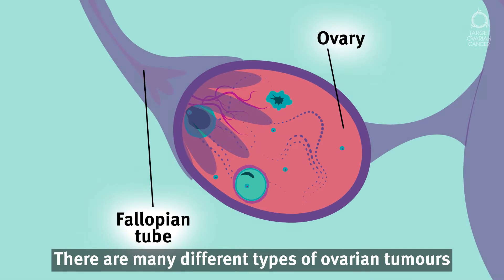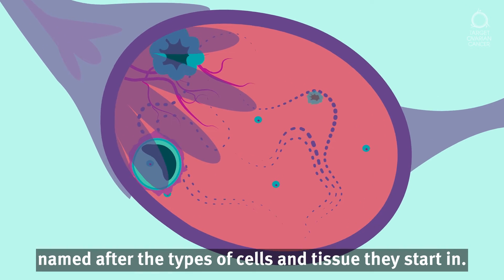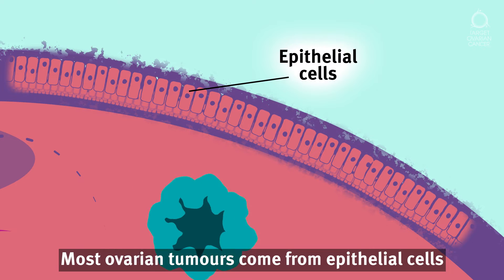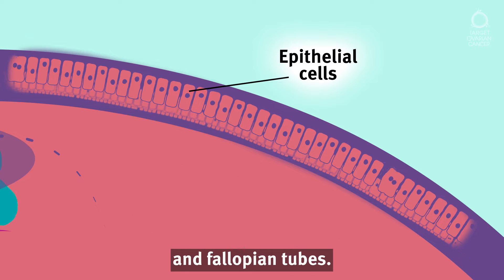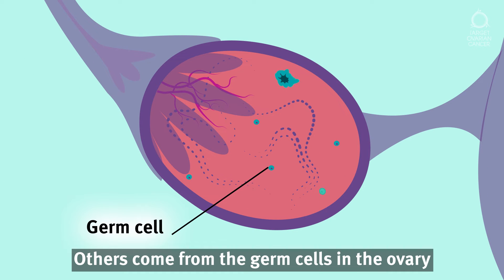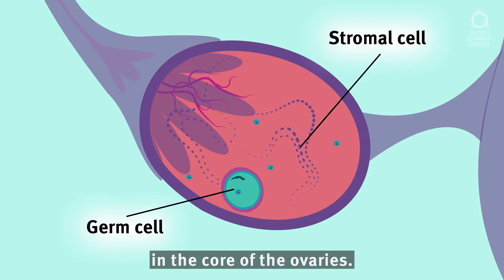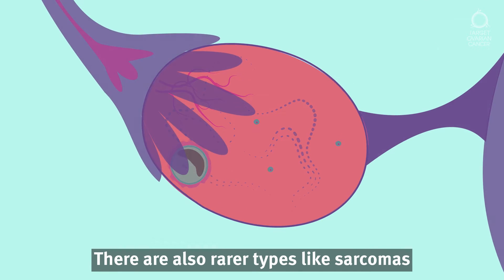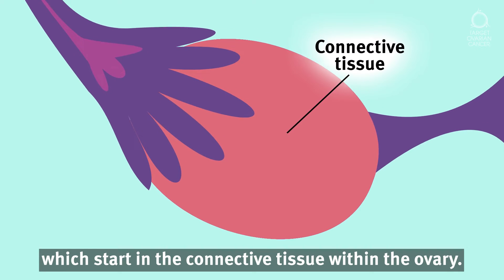There are many different types of ovarian tumours, named after the types of cells and tissue they start in. Most ovarian tumours come from epithelial cells, which cover the surface of the ovaries and fallopian tubes. Others come from the germ cells in the ovary that develop into eggs, or from the stromal cells in the core of the ovaries. There are also rarer types like sarcomas, which start in the connective tissue within the ovary.